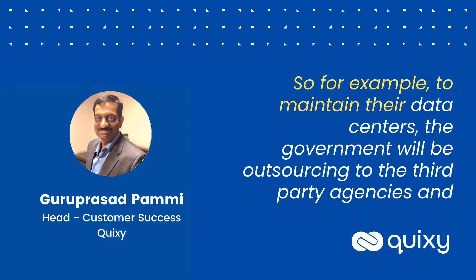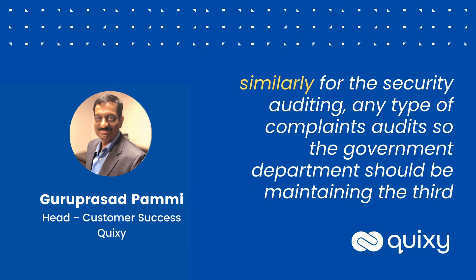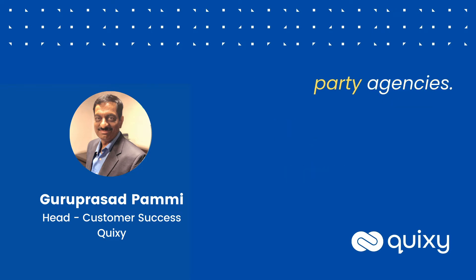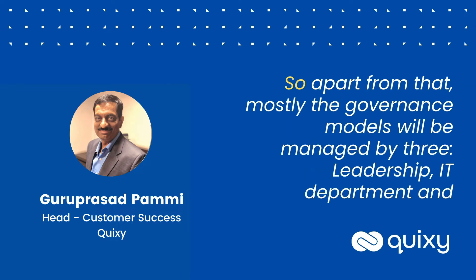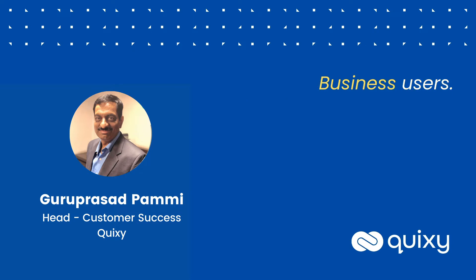For example, to maintain their data centers, the government will be outsourcing to third-party agencies. And similarly for security auditing, any type of compliance audits, the government departments will be maintaining third-party agencies. So apart from that, the governance models will mostly be managed by these three: leadership, IT department, and business users.